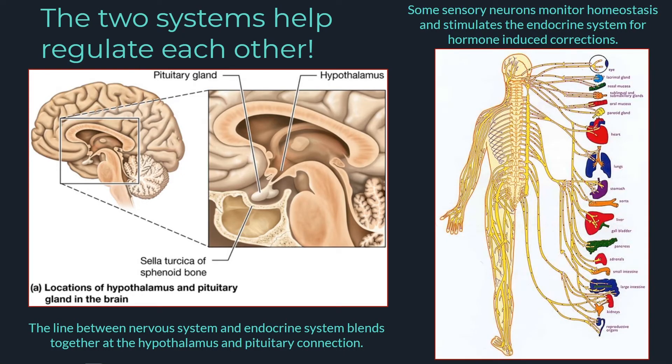Make no mistake about it though, the two systems are intimately connected and help regulate each other's functions. Neurons from all over the body will deliver information to glands to trigger hormone secretion, thus recruiting the endocrine system for homeostatic adjustment. Additionally, the posterior portion of the pituitary gland is actually a neurological extension of the hypothalamus and serves as a storage site for hormones to be released. These neuroendocrine connections are pivotal to maintaining homeostasis and we will get to discuss more about this hypothalamic-pituitary relationship in the near future.